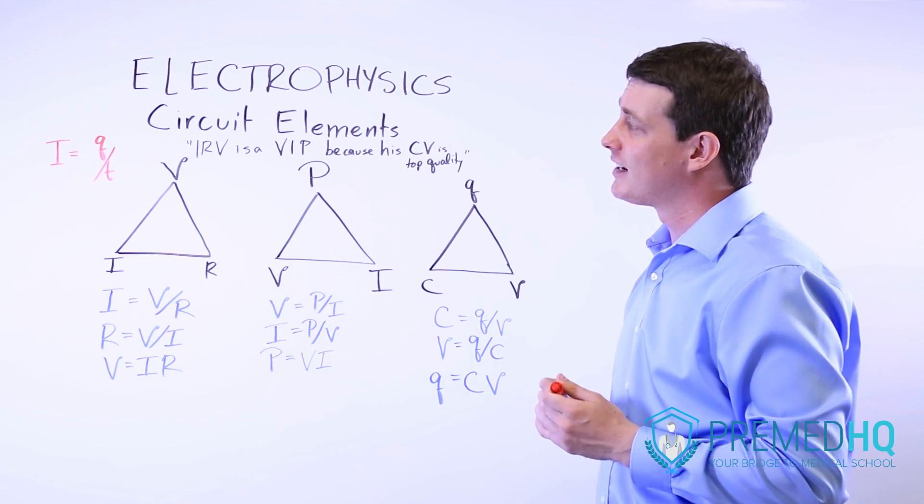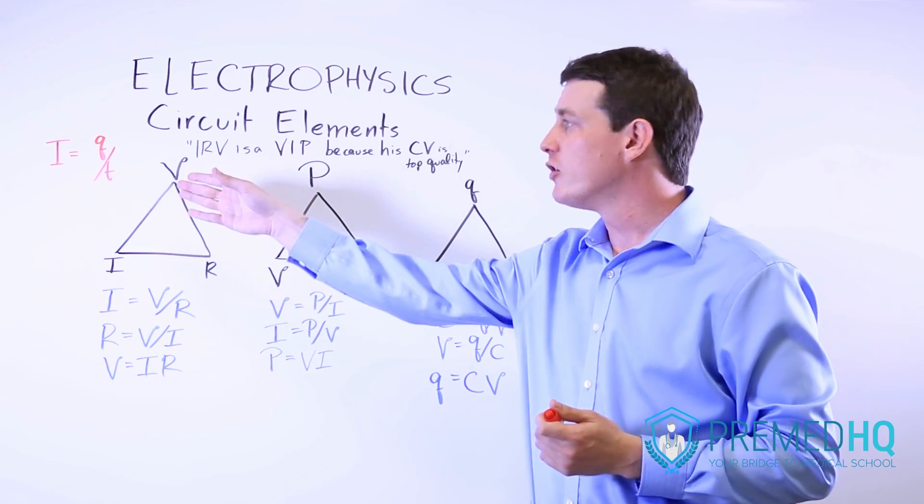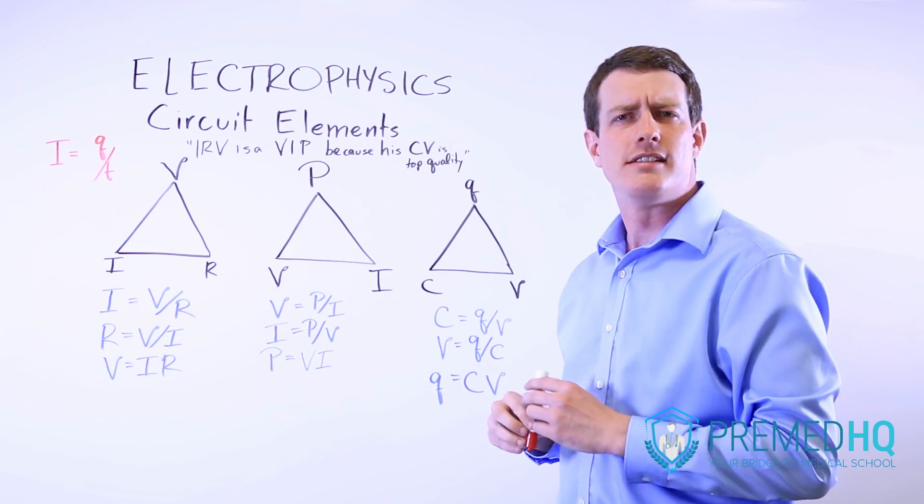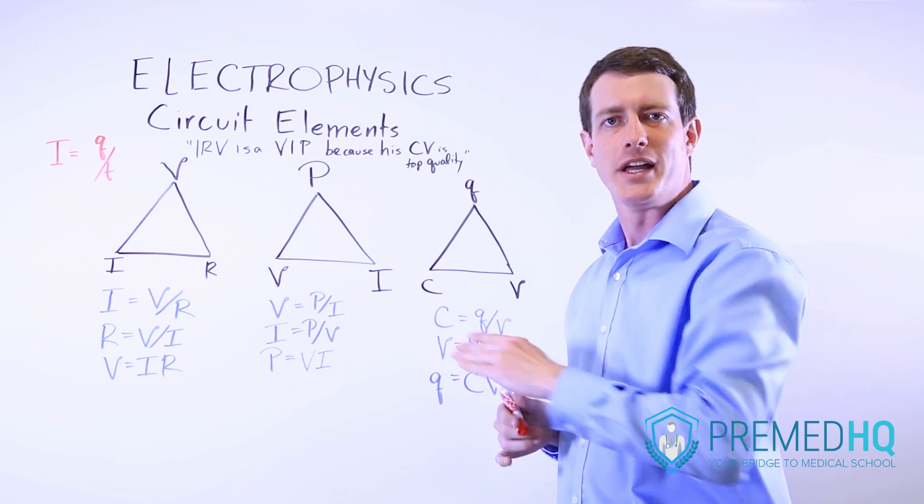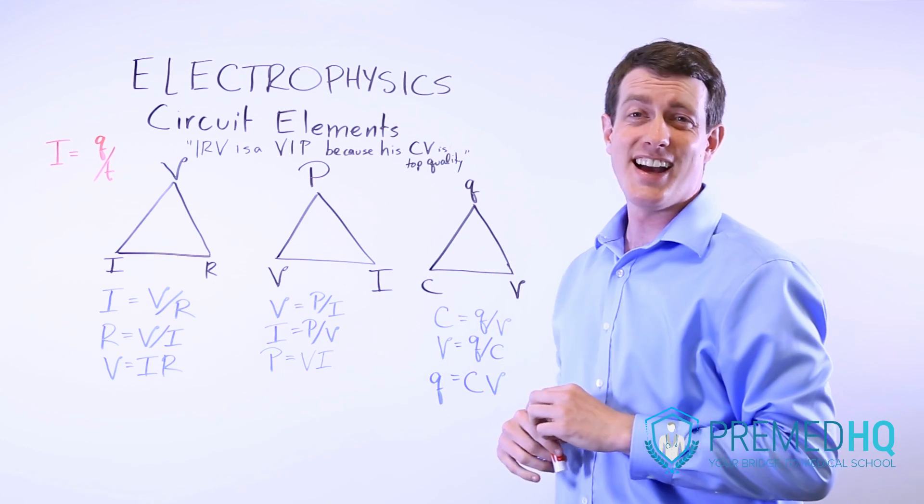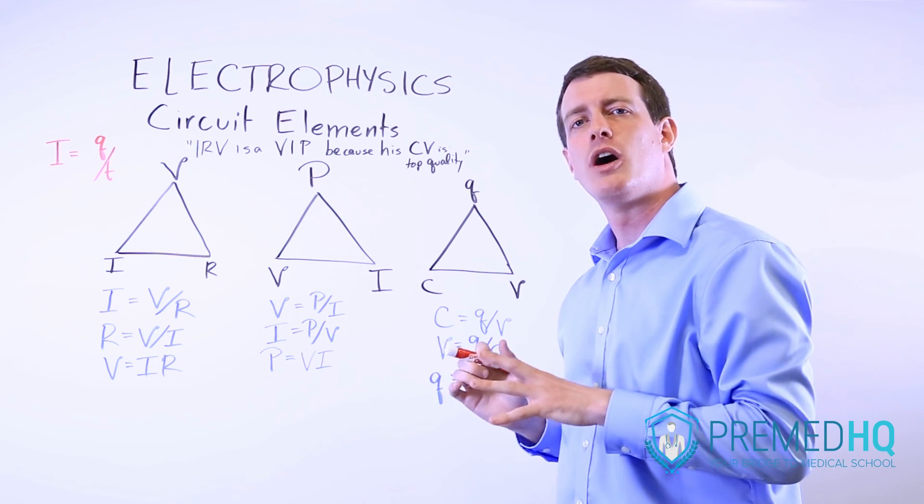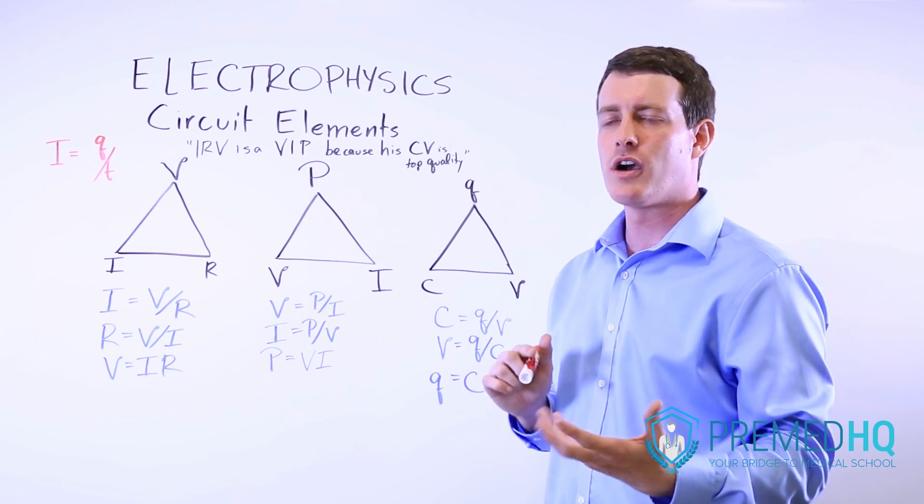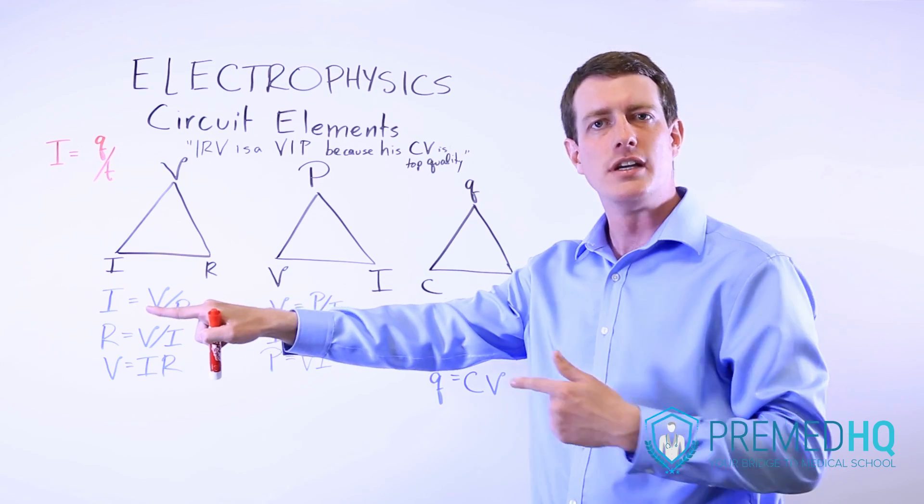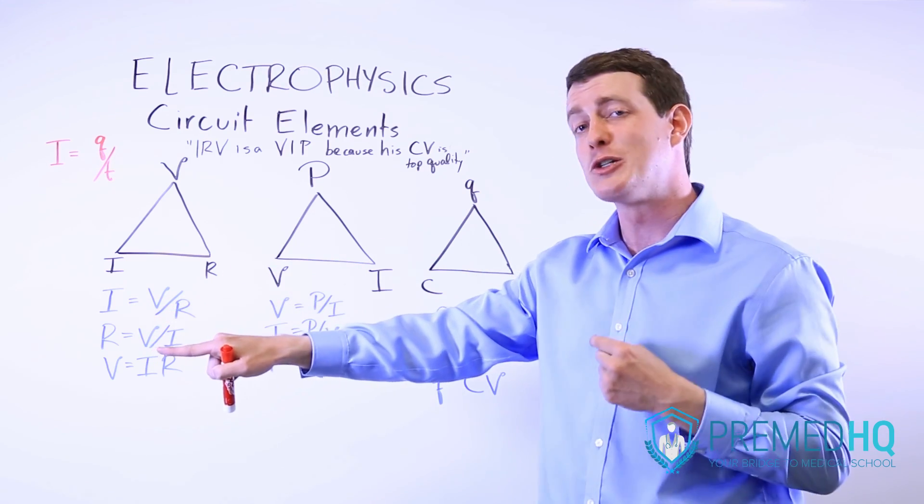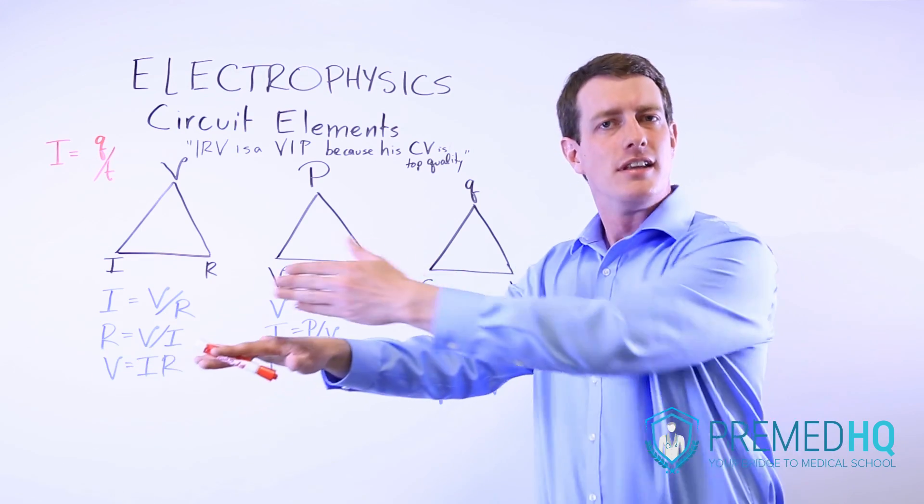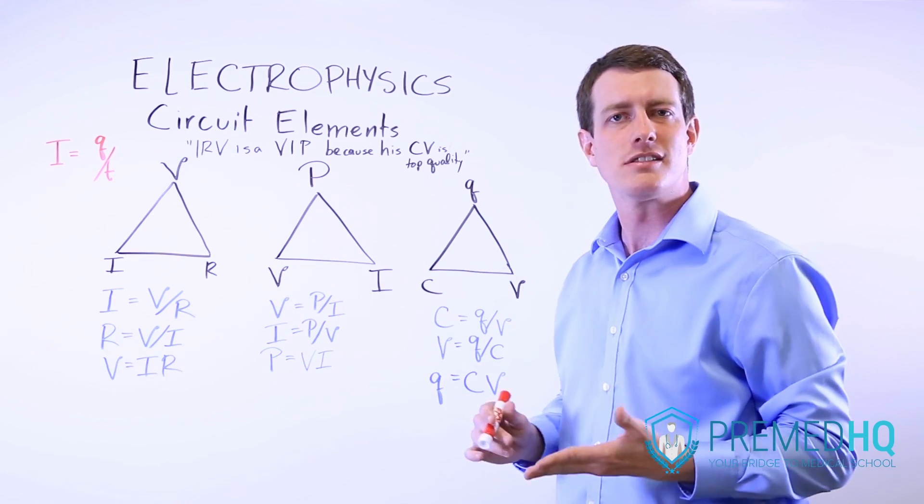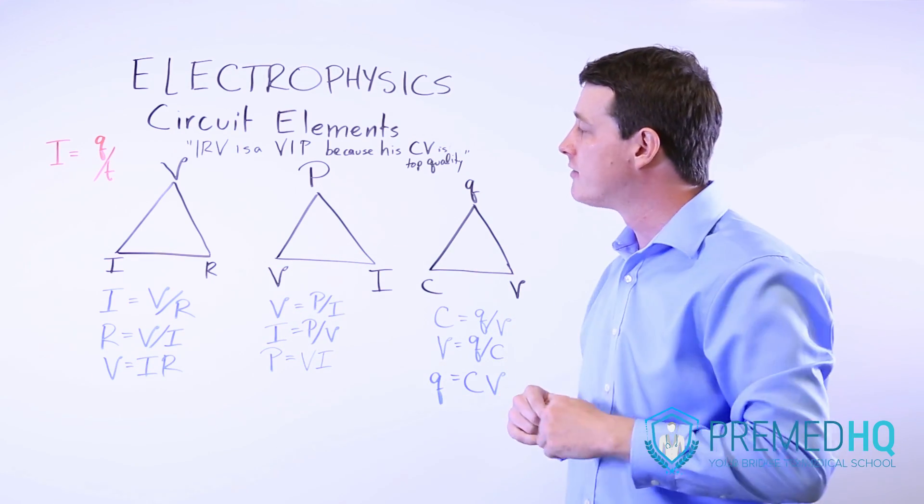One thing to recognize is that the current I is the charge over time that is passing through a particular point. And it's defined as the direction of flow of the positive charge. So if you have something where electrons are moving in this direction, the current will be moving in the other direction because the negative electrons move opposite the flow of the positive current.